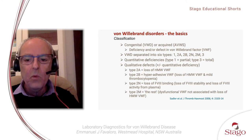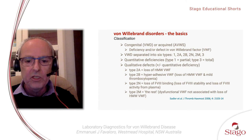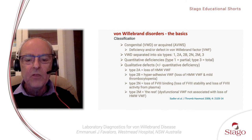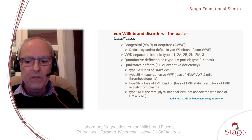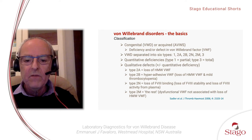There are quantitative deficiencies: Type 1, which is a partial quantitative deficiency of von Willebrand factor, and Type 3, which is a total deficiency. In Type 1, there's a partial deficiency but the von Willebrand factor present is functionally normal. Then we have four qualitative defect types. Type 2A is represented by a loss of high molecular weight VWF. Type 2B is a hyperadhesive form of von Willebrand factor, which also presents with a loss of high molecular weight VWF and a mild thrombocytopenia. Type 2N is represented by a loss of factor VIII binding, so von Willebrand factor does not bind to factor VIII very well, leading to a loss of factor VIII stability and lower levels of factor VIII in plasma.